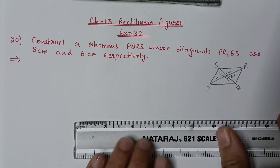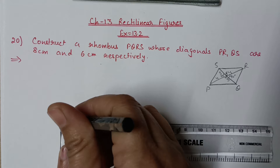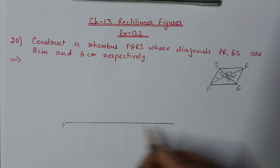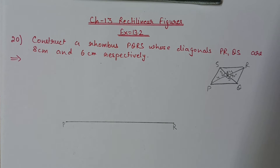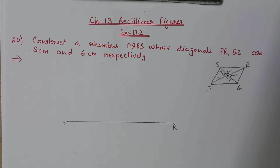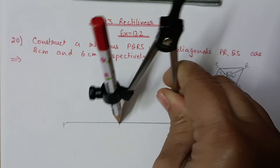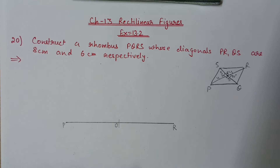We will start with the diagonals since we only have diagonal information. First, draw the first diagonal PR equal to 8 centimeter. Then mark its midpoint at 4 centimeter — this is the intersection of diagonals, point O.